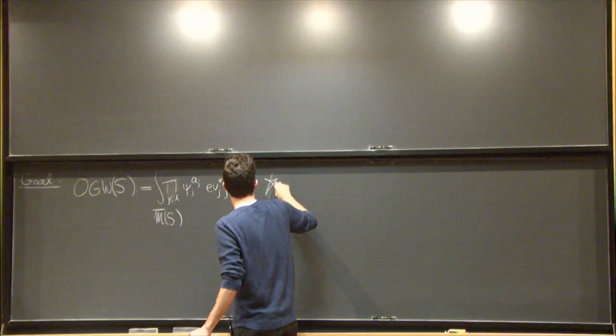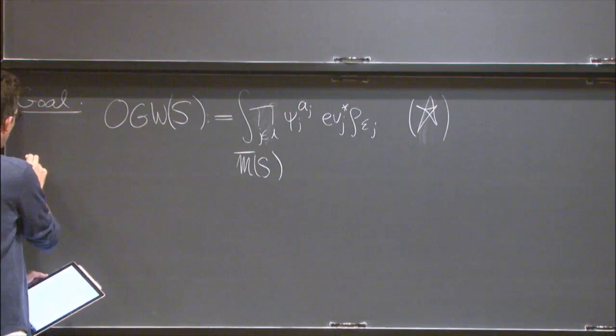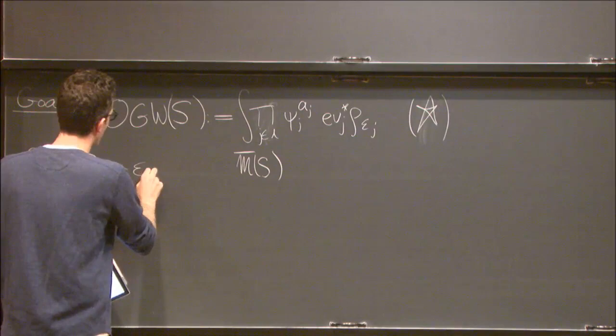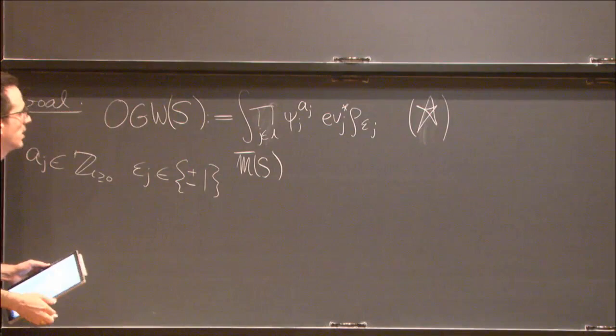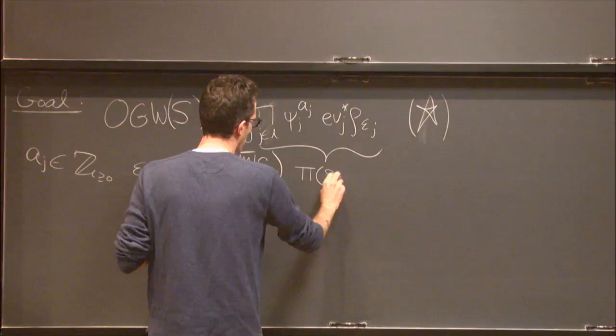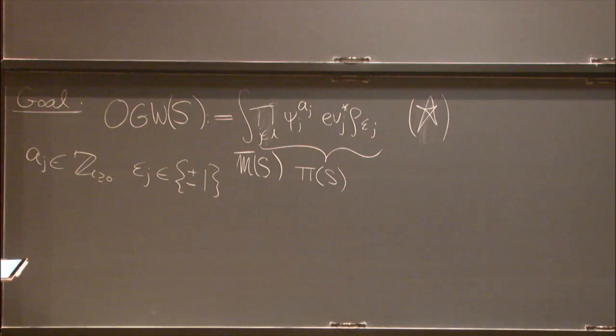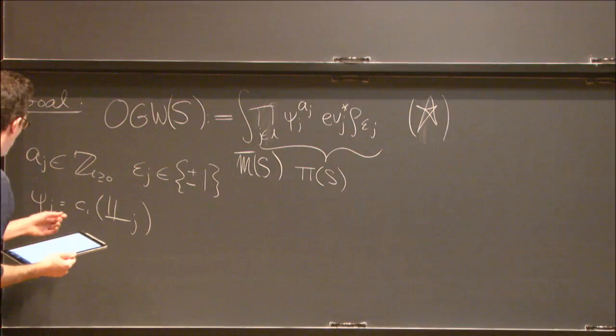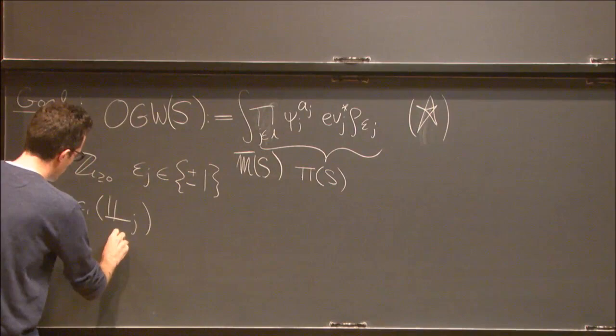I need to say a few words about this. The integrand is encoded by S via the subset L — we fix sequences of non-negative integers a_j and bits epsilon_j in advance. Now, what are these psi's? Psi_j is the first Chern class of the j-th cotangent line: L_j is the cotangent to the domain at the j-th marked point. And rho_{plus/minus} is the Poincaré dual to either p_plus or p_minus.